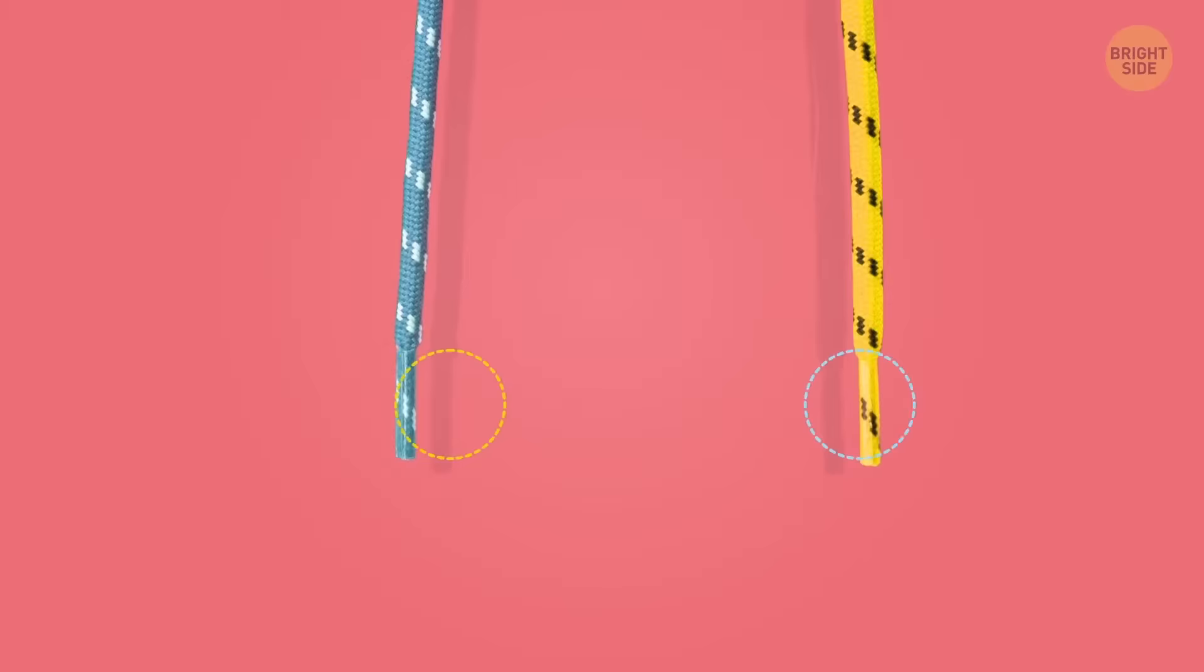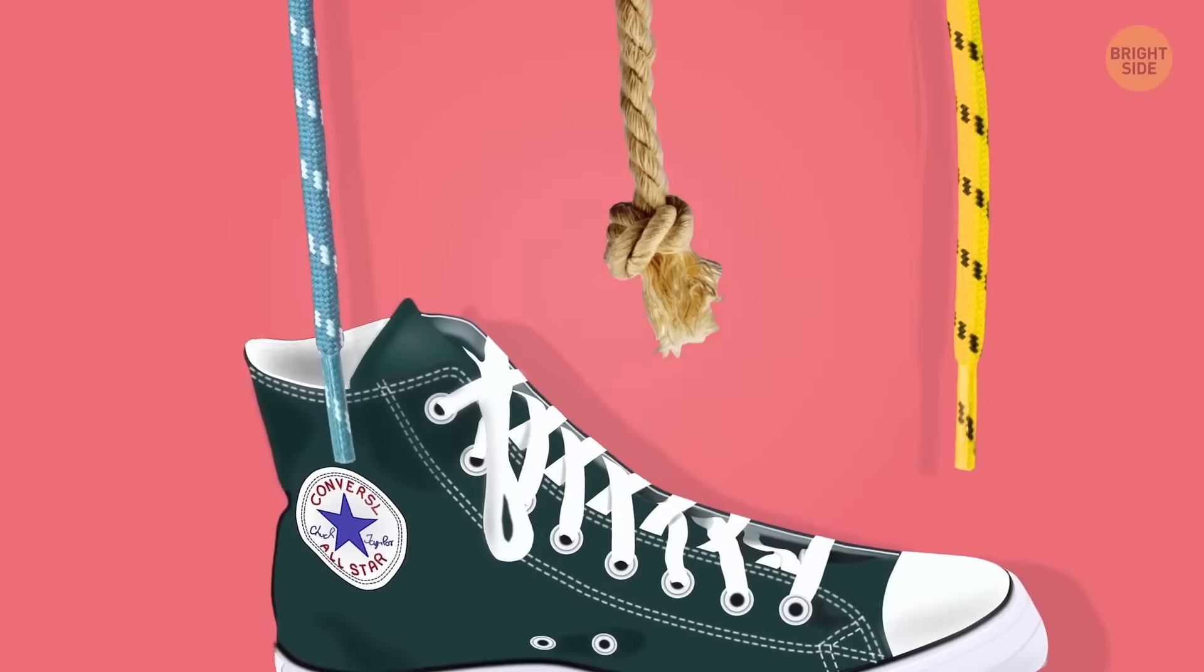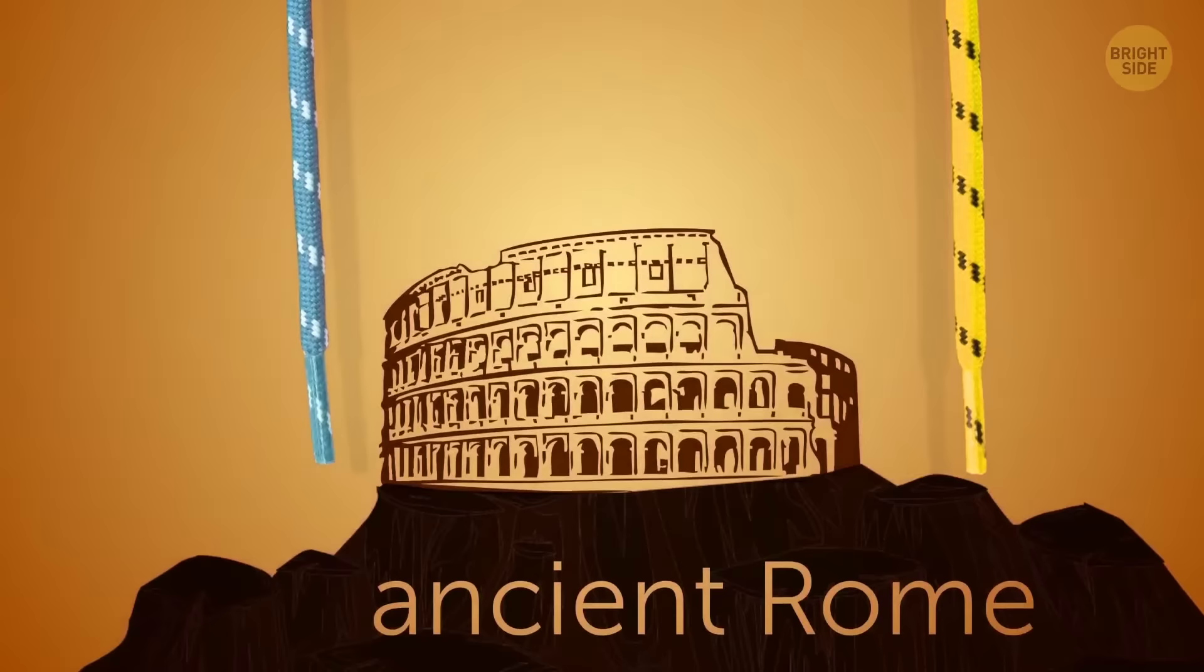Ever paid attention to those metal or plastic tips on the ends of your shoelaces? They're called aglets. Sure, they keep the strings from fraying and they make lacing your shoes a bit less labor-intensive. But here's the surprising bit. They appeared in ancient Rome, where people made them out of glass or stone.